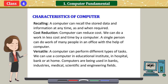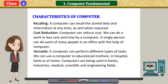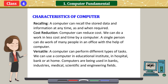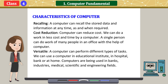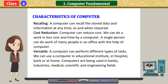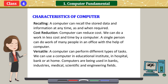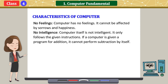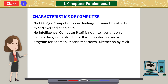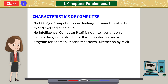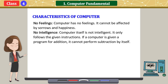A single person can do the work of many people in an office with the help of a computer. Versatile: a computer can perform different types of tasks. We can use a computer in educational institutes, in hospitals, banks, or at home. Computers are being used in banks, industries, medical, scientific, and engineering fields. No feelings: a computer has no feelings; it cannot be affected by sorrows and happiness. No intelligence: a computer itself is not intelligent. It only follows the given instructions. If a computer is given a program for addition, it cannot perform subtraction by itself.